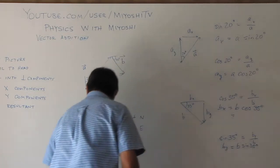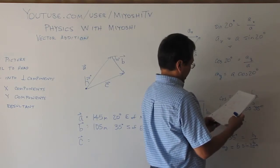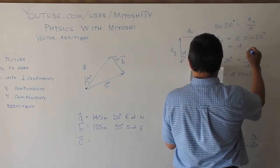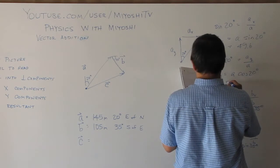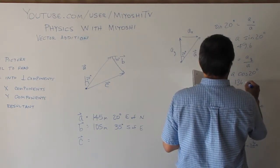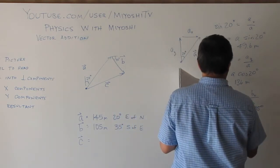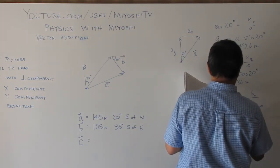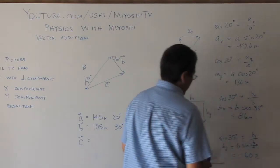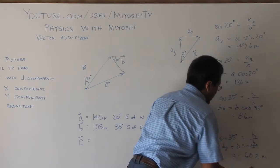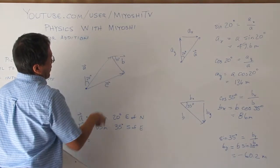Now, I already did these calculations. And so ax is 49.6 meters and ay is 136 meters. And bx is 86 meters. And by is negative 60.2 meters. The negative says it's going in the negative y direction, and that's consistent with what we see here.